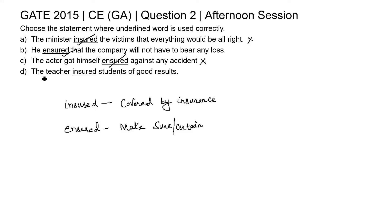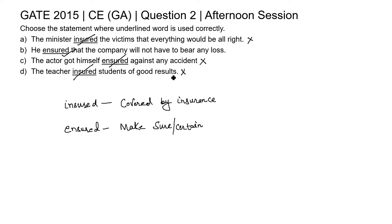The next option, option D, states: 'The teacher insured a student of good results.' Here the word 'insured' (i-n-s-u-r-e-d) means covered by insurance, but it is used incorrectly in this sentence. Because the teacher is making sure the students of good results, the word should be 'ensured' (e-n-s-u-r-e-d). So option D is also wrong.